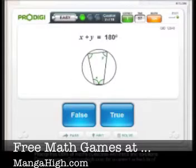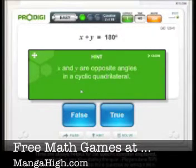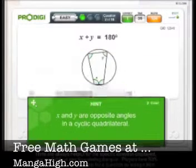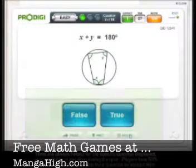And here it's asking us if X plus Y equals 180 degrees. This is a new concept for me, so I'm going to ask for a hint about this. It's telling us that X and Y are opposite angles in the cyclic quadrilateral. The hint is specific to the question but I'm still kind of confused, so I'm going to ask for a solution on this.